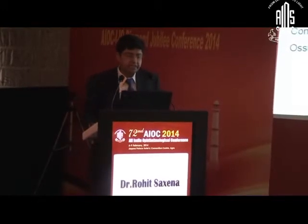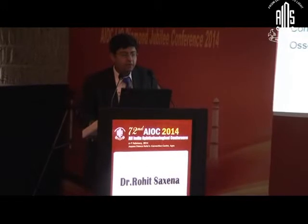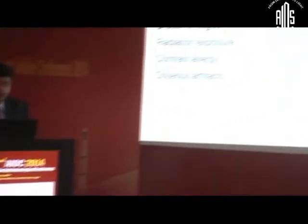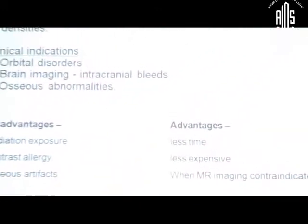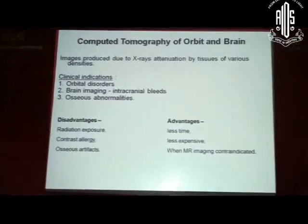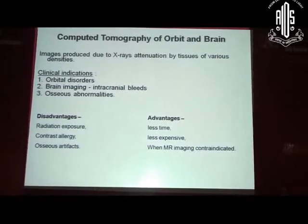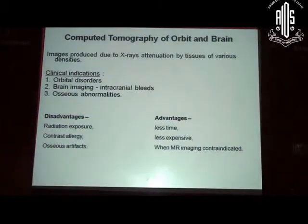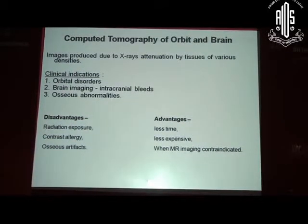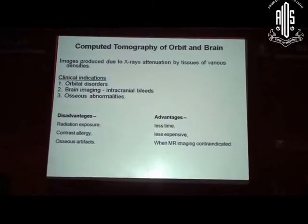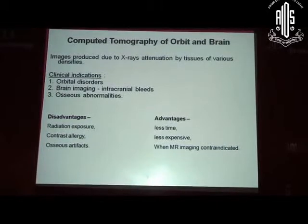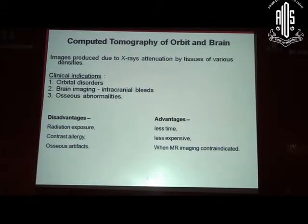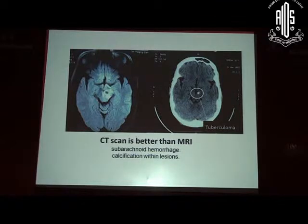CT scans: major clinical indications would be orbital disorders, acute intracranial bleeds, and bony anomalies. The advantage is that it's very fast and rather inexpensive now, and it's useful in conditions where MRI is contraindicated, like a patient having a metal implant in the body. The disadvantages are radiation exposure, contrast allergies, and bony artifacts that occur particularly in regions where there is a lot of bone around, like in the brainstem, where it's difficult to pick up soft tissue lesions on CT. CT is better for subarachnoid hemorrhages and for looking at calcifications.